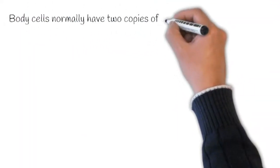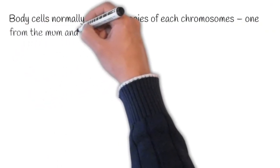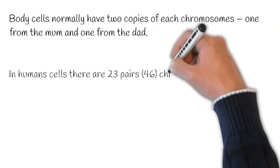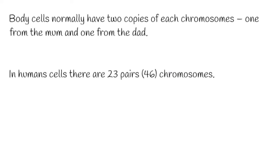Body cells normally have two copies of each chromosome, one from the mum and one from the dad. In human cells there are 23 pairs of chromosomes.